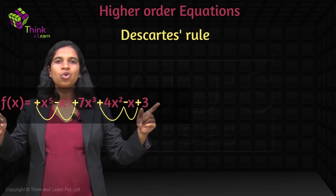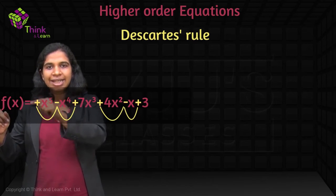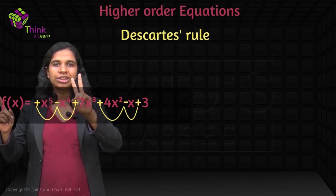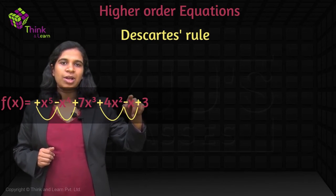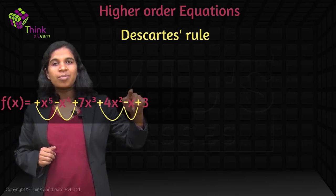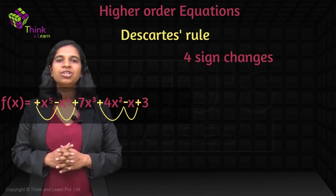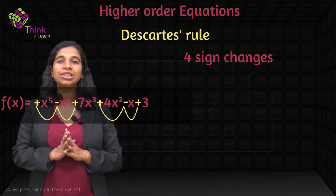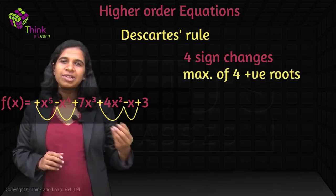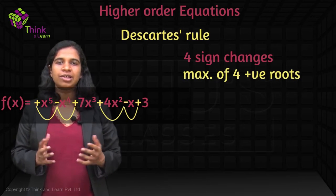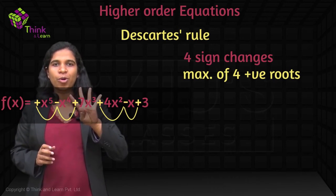Now look at the sign changes as you go across this. First, plus to minus — that is one sign change. Then minus to plus — another sign change. So we got two sign changes. Then there are no sign changes from the cubic to the squared term. Then going from X squared to X you see a sign change: plus to minus. And again going from X to the constant, you see a sign change: minus to plus. So there are four sign changes here, which tells you that this equation has a maximum of four positive real roots.